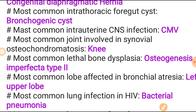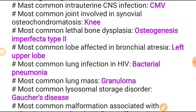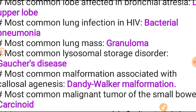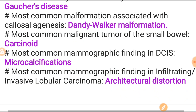Most common joint involved in synovial osteochondromatosis is the knee joint. Most common lethal bone dysplasia is osteogenesis imperfecta type 2 - note it is type 2, not type 1, which is a common confusing point. Most common lobe affected in bronchial atresia is the left upper lobe. Most common lung infection in HIV is bacterial pneumonia. Most common lung lesion is granuloma. Most common lysosomal storage disease is Gaucher's disease.